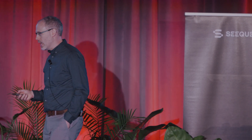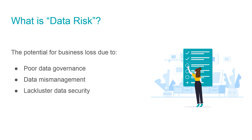When I talk about data risk, the key is really about potential loss — potential loss due to poor data governance, which is about data quality throughout the life cycle of the data. Data mismanagement covers all the processes for acquiring, validating, storing, protecting, and disseminating data to users. And then data security covers difficulties in protecting your data and being prepared for data breaches and cyber threats.